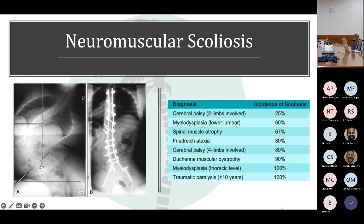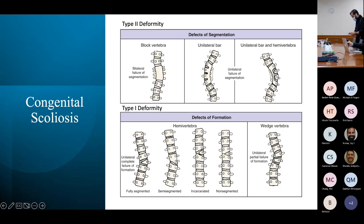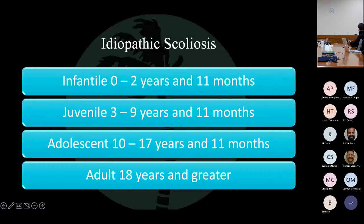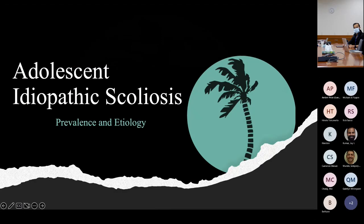Briefly about neuromuscular scoliosis: it's caused by an inability to control the muscles that support the spine. This patient has spinal muscular atrophy, classically seen as a large C-type curve. Congenital scoliosis is more a failure of formation of the spine, either a defect of segmentation or formation. With idiopathic scoliosis, there are multiple classifications based on age — infantile and juvenile primarily making up early onset scoliosis — but today we'll focus on adolescent.